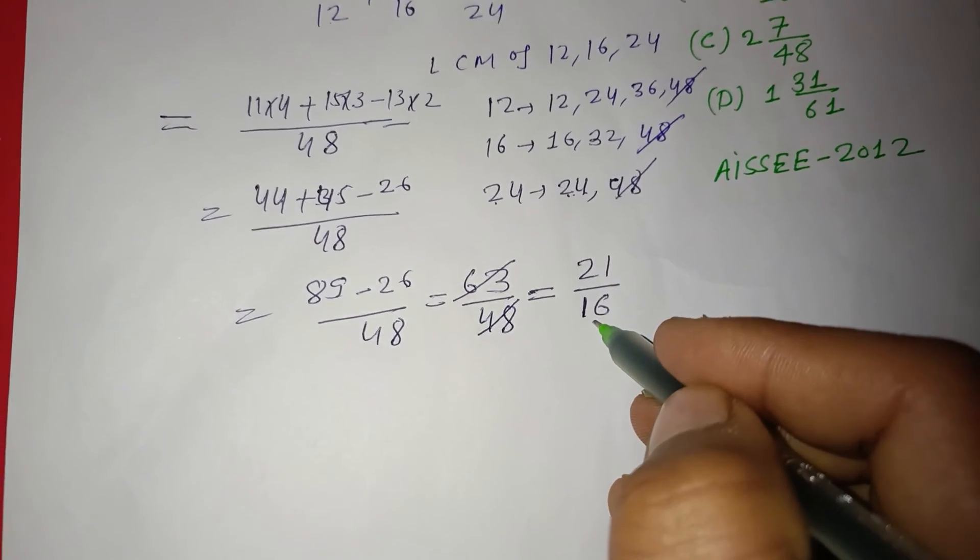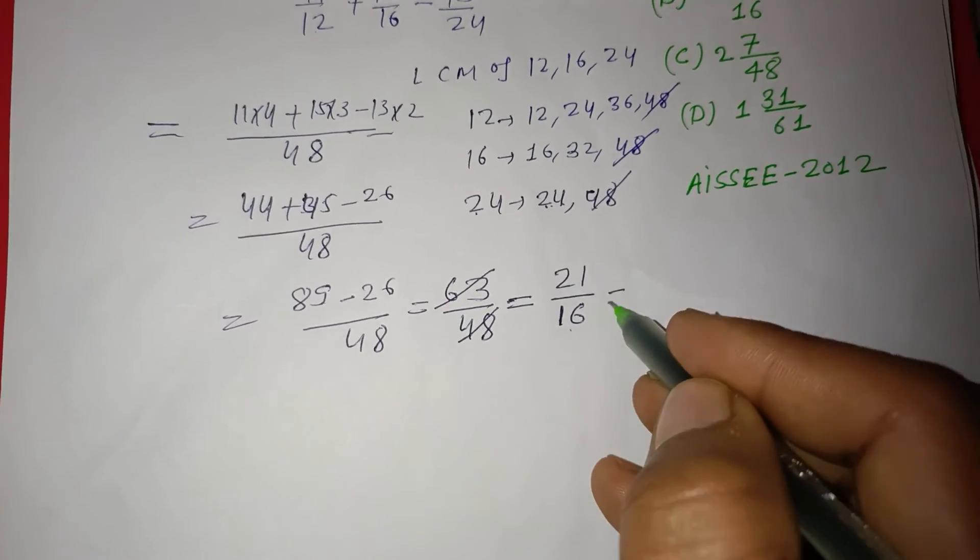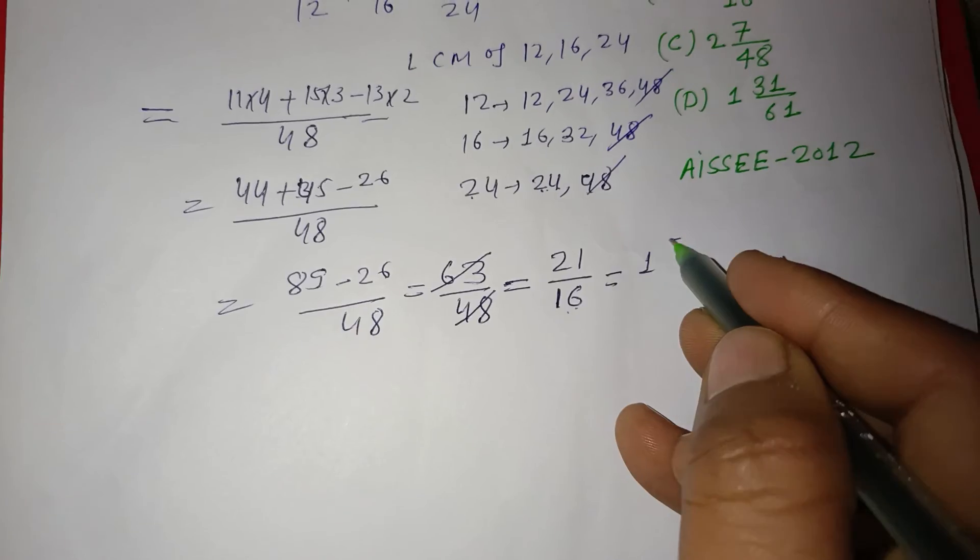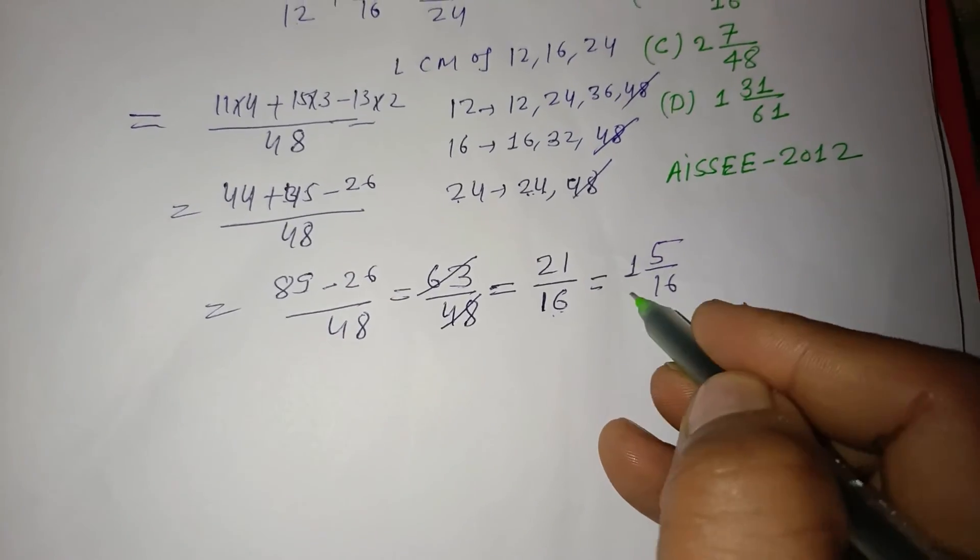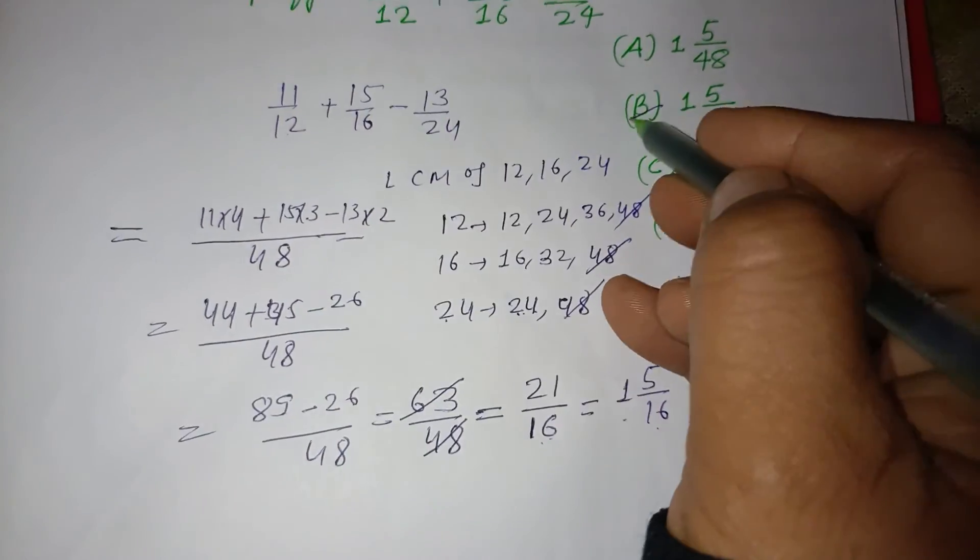21/16 equals 1 with remainder 5, so the answer is 1 and 5/16. This is the correct answer, which is found in option B.